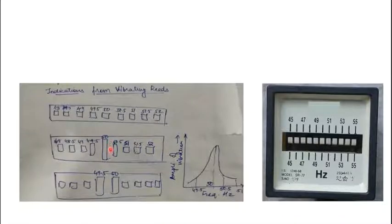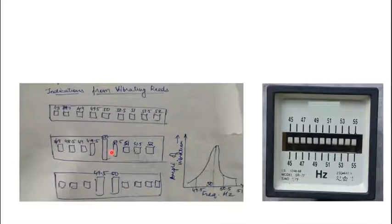If the frequency is 50.2 Hz, which is well within the prescribed standard range, it might happen that the 50.5 Hz or 50 Hz reed — whichever is closer — oscillates and gives a wrong indication. That is one of the biggest problems of this reed type instrument. However, it is very simple, very easy to use, and at the same time cost effective.